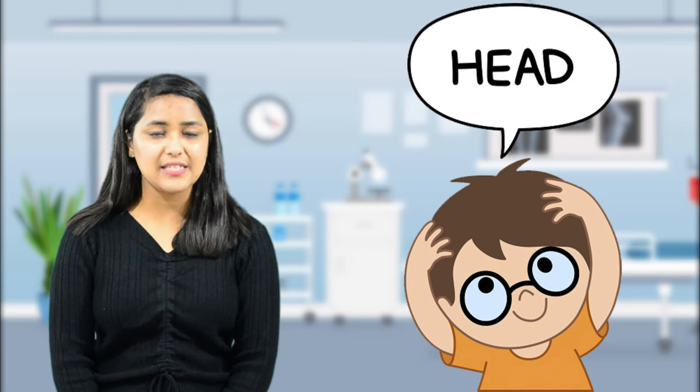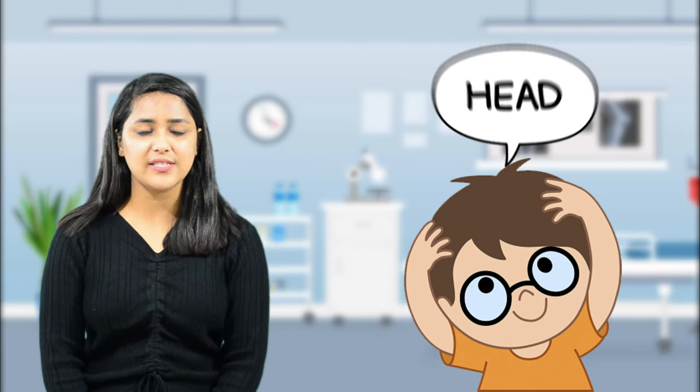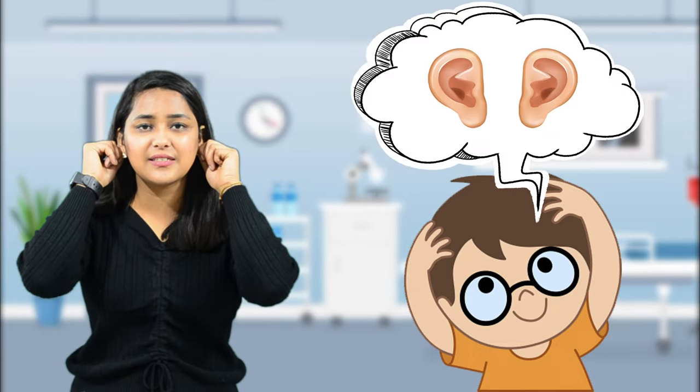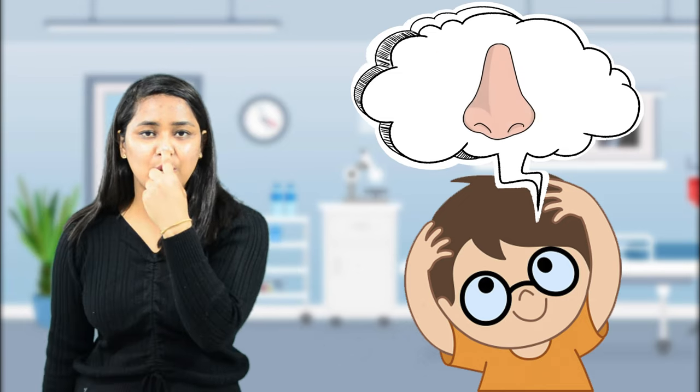Now, what does the head help us to do? The head contains some sensory organs which are two eyes, two ears, one nose and one little mouth.